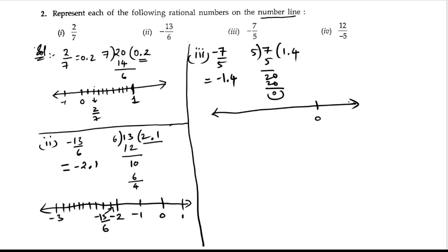Let us draw a number line. 0, 1, before 0, minus 1. After minus 1, minus 1.1, 1.2, 1.3, 1.4, 1.5, 1.6, 1.7, 1.8, 1.9, minus 2. Now this is minus 1.4. So 1.1, 1.2, 1.3, 1.4. Here it is, we can write minus 7 by 5.